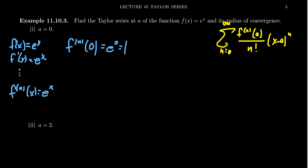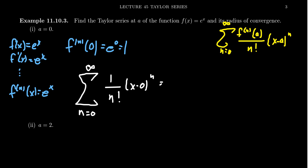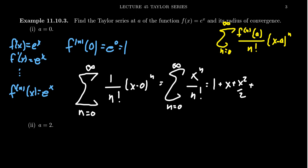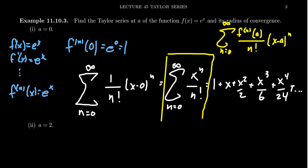Therefore, the Maclaurin series for e to the x equals the sum from n equals zero to infinity of one over n factorial times x minus zero to the n, or in simpler form, the sum from n equals zero to infinity of x to the n over n factorial. In expanded form this looks like one plus x plus x squared over two plus x cubed over six plus x to the fourth over 24, and so on. Every Maclaurin series is a Taylor series — Maclaurin just means we've centered at zero.